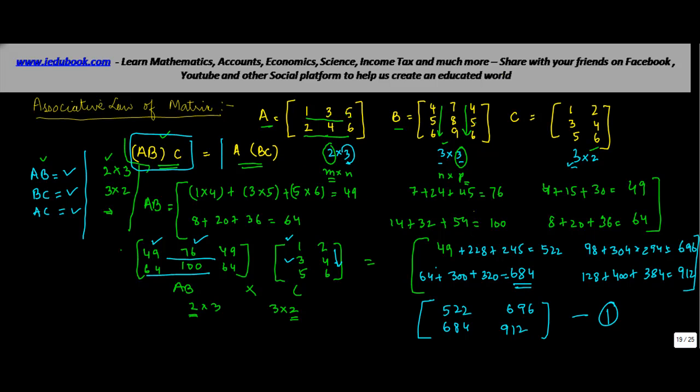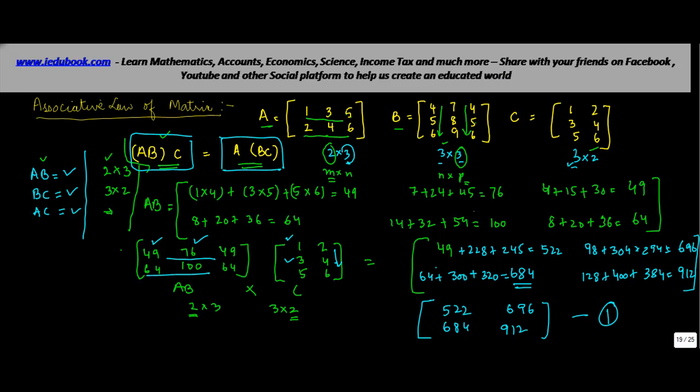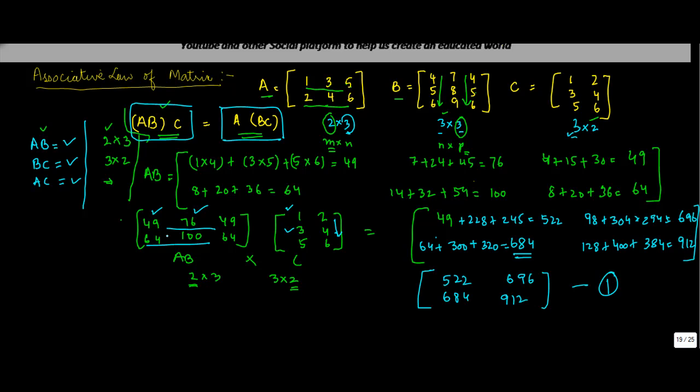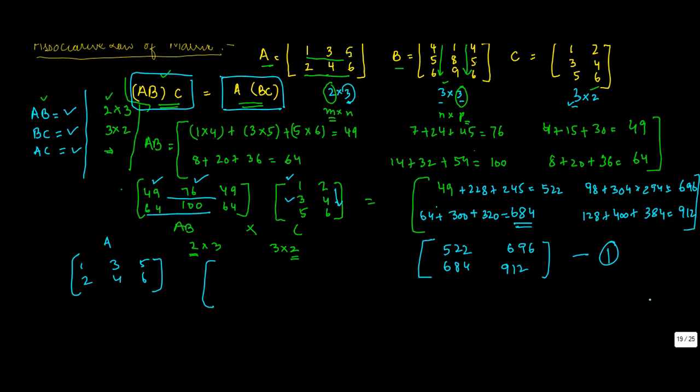Let's see the 2nd one. A cross. So, this will be basically 1, 2, 3, 4, 5, 6, which is A, into B into C, B into C. Let's give a little bit more space. So, this is 3 by 3. This is 3 by 2. So, B into C is going to be 3 by 2. 3 rows, 2 columns.